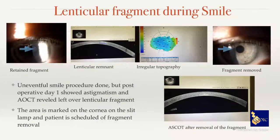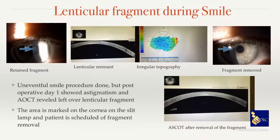Another SMILE complication: residual lenticule. A patient presented day one post-SMILE with poor vision. Anterior OCT showed a residual lenticule island with irregular astigmatism. The best approach is to mark the lenticule on slit lamp, return to the OR, use the slit to locate it, and dissect it out. You can also do negative staining with fluorescein to pick up and remove lenticule fragments. If done early, the patient regains good vision.